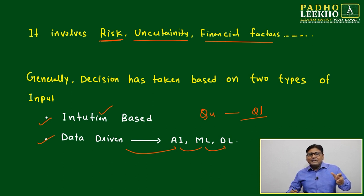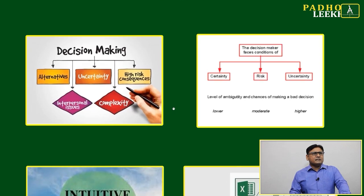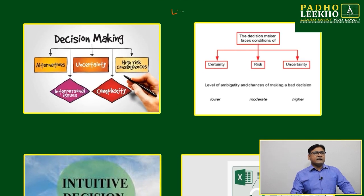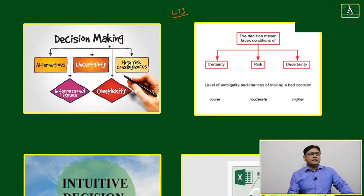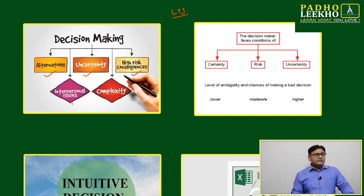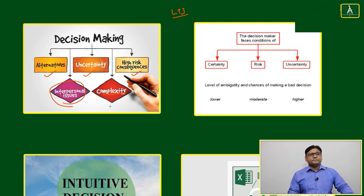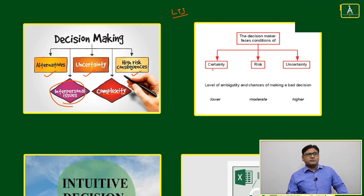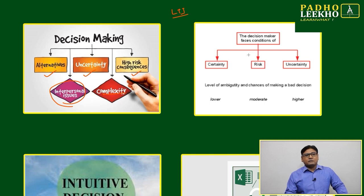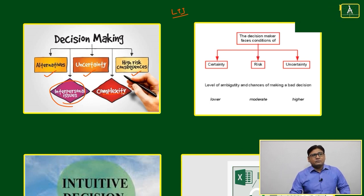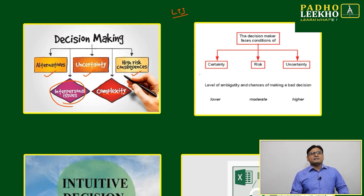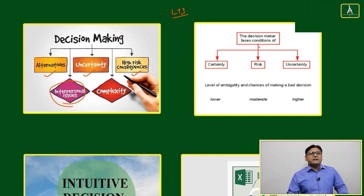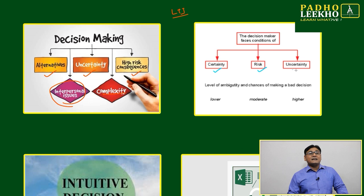Let's try to learn through images. This is your decision-making: alternatives, uncertainty, high risk, consequences, complexity, interpersonal issues - all these you have to consider. After MBA, once you get the job, this all will be your day-to-day job - how to consider all these factors and arrive at the decision. The decision-maker faces conditions of certainty, risk, and uncertainty.